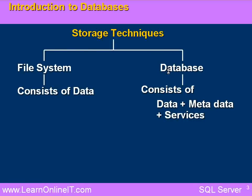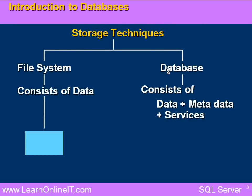A database can also consist of metadata — metadata is nothing but data about data. Regarding how data is stored: in case of a file system, data is stored in a sequential manner, line by line. Whereas in case of databases, there are so many storage levels — physical level, logical level, and view level.